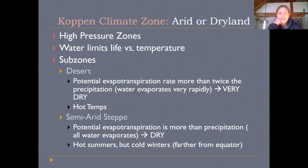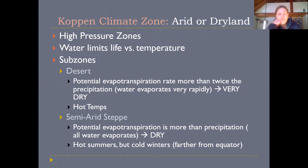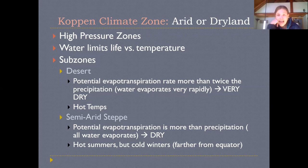Essentially, the areas that behave like the equator, those that behave like 30-degree subtropical high pressure zones, and those that behave like approximately 60-degree low pressure zones actually rotate a little bit on the earth from season to season. This is why you don't have exactly the same climate all year long. Moving from the equator outwards, the next set of climate zones we encounter are the arid and dryland zones, experienced around those subtropical high pressure zones.